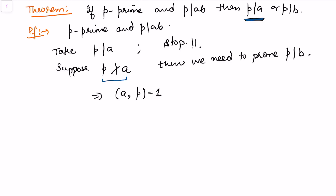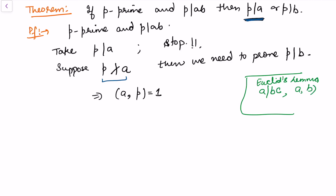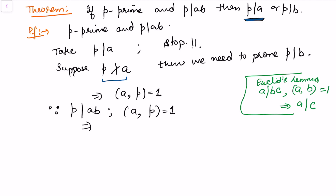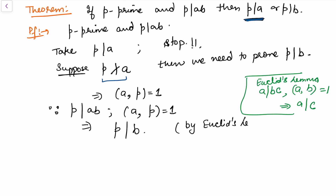When p does not divide a, we can see that gcd(a, p) = 1. Recall Euclid's lemma from an earlier video: whenever a divides bc and gcd(a, b) = 1, this implies a divides c. Applying Euclid's lemma here — since p divides ab and gcd(a, p) = 1 — we can directly conclude that p divides b.